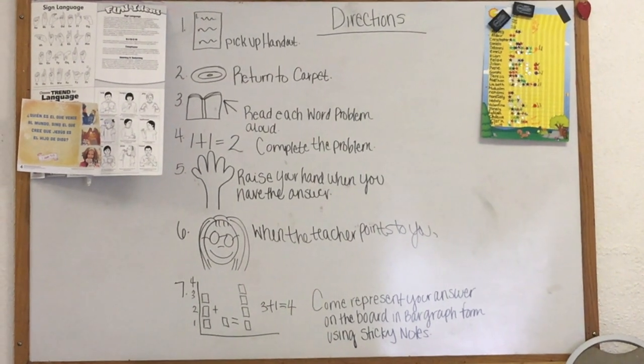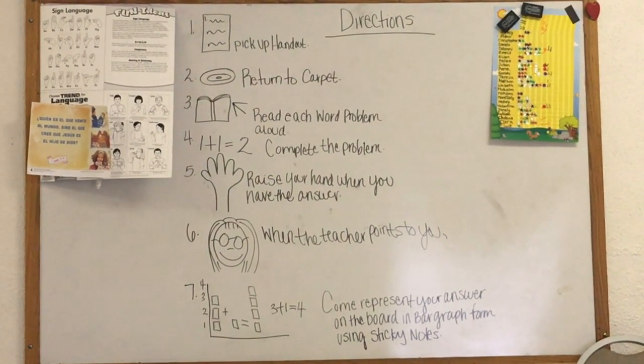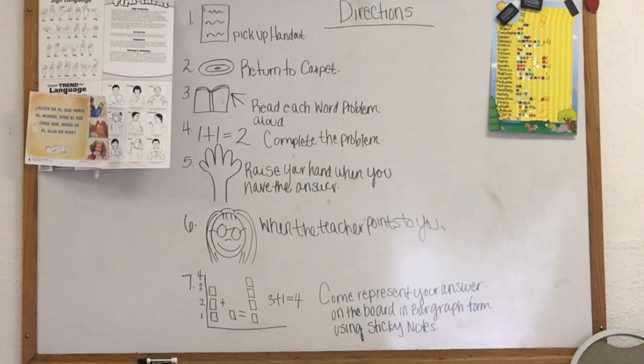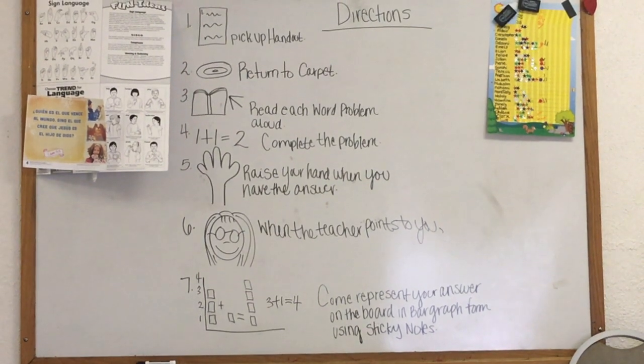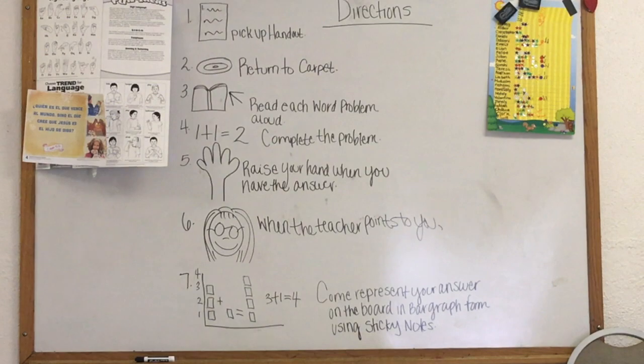Students understand how English is written and printed. Students are expected to A, recognize the spoken words are represented in written English by specific sequences of letters, and D, recognize the distinguishing features of a sentence, capitalization of the first word, ending punctuation.